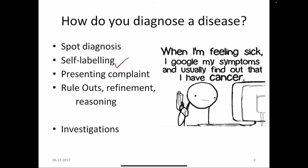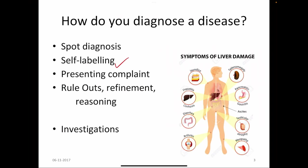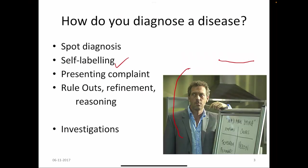We have self-labeling: patients, based on their symptoms, directly go on the internet, ask their friends, and come out with their own diagnosis. Most of the time it will be threatening them. The third type is based on the presenting complaint — you can arrive at a diagnosis of liver failure. Then we have the place of ruling out the possibility of the presence of the disease, then refinements, then reasoning out, thereby diagnosing a disease.